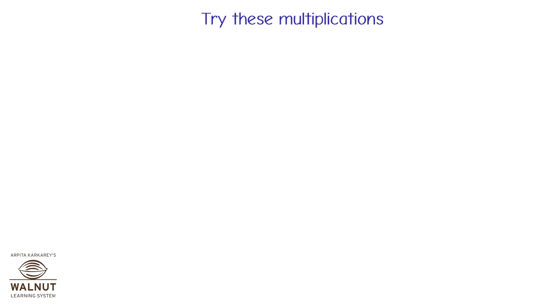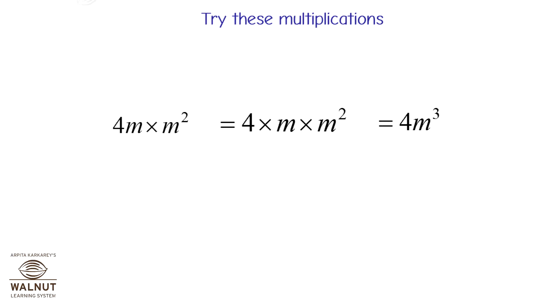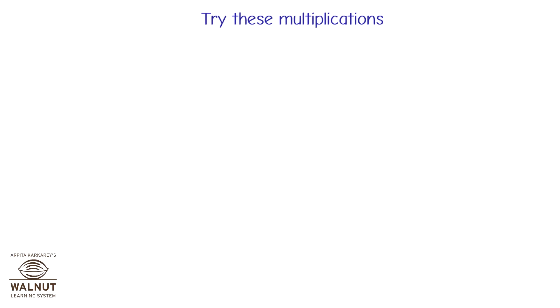Try these multiplications. 4m into m squared is equal to 4 into m into m squared, which is equal to 4m cubed. p upon 3 into p squared upon 4 is equal to p cubed upon 12.